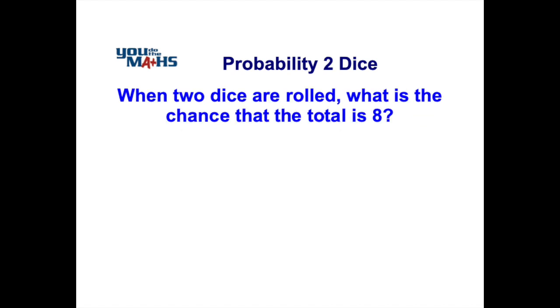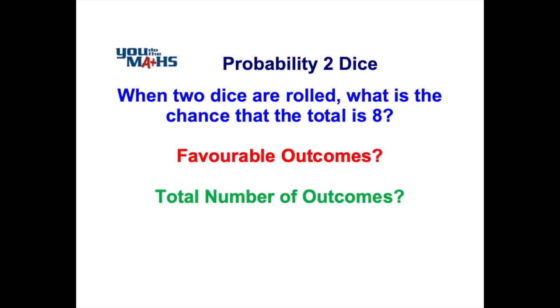In this next example we're rolling 2 dice and we want to work out the chance of getting a total of 8. Now with any probability question, what we need to do is work out all of the favourable outcomes, in other words how often 8 occurs, and determine what that is as a fraction over all of the possible outcomes that occur when 2 dice are rolled.